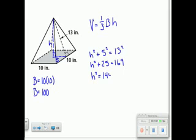Square root both sides. H is equal to 12. So now we have our height. We have our base.